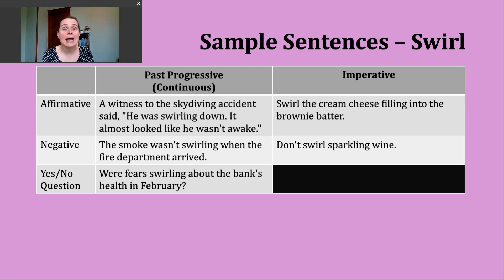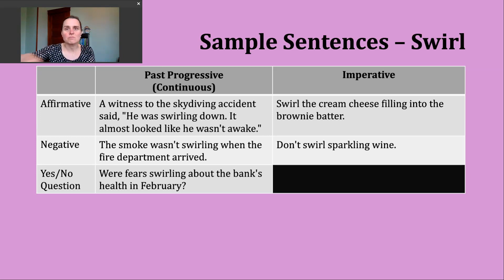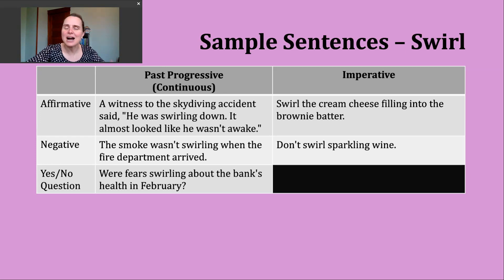Here's an affirmative imperative example: swirl the cream cheese filling into the brownie batter. This is a command telling us what to do — the type of sentence you might see in directions or a recipe, providing different steps and describing that twisting, spiraling motion with one ingredient into the others.